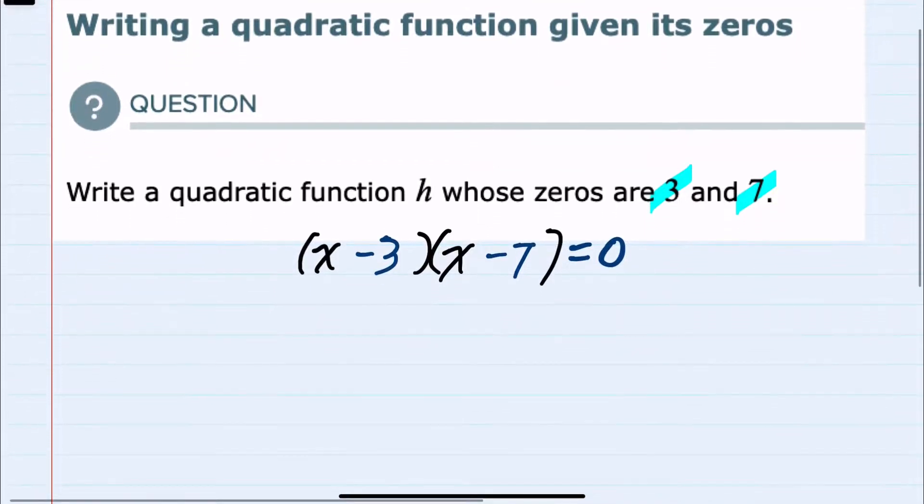To find the equation I'll just foil this out to be x times x which is x squared. x times minus 7 which is a minus 7x. Minus 3 times x is a minus 3x.